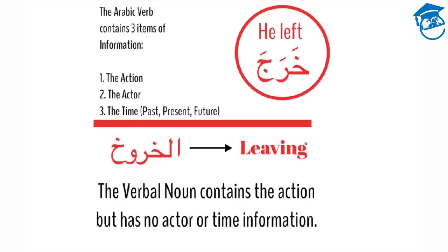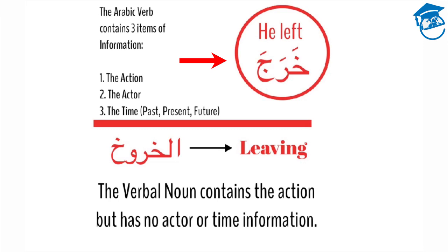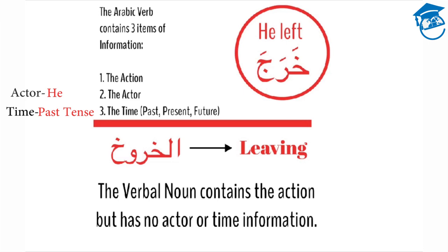Let's examine the relationship between the present tense verb — al-fi'al al-mudari' — and the masdar, or the verbal noun. The Arabic verb contains three items of information: one, the action; two, the actor; and three, the time, whether it's past, present, or future. For example, the verb kharaja — kharaja means he left. The action is leaving, the actor is he, and the time is past tense. The verbal noun, al-khuruj, which is formed from kharaja, means leaving. The verbal noun contains the action, but it has no actor or time information.